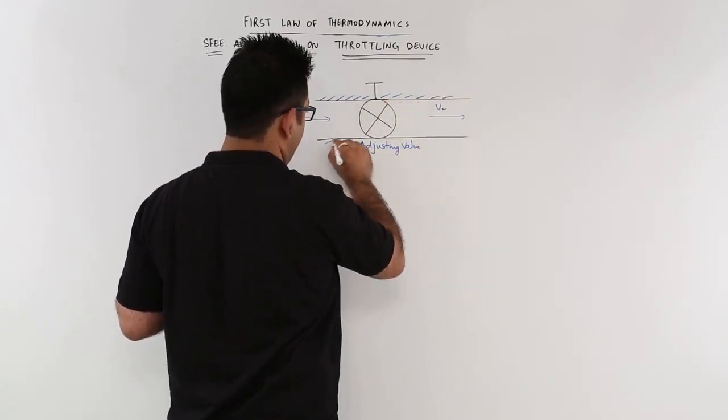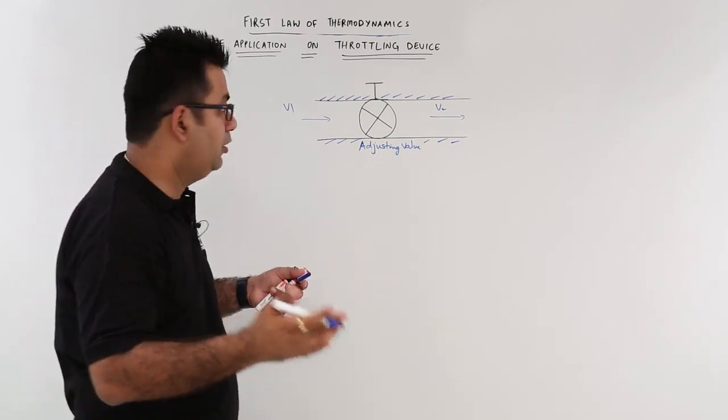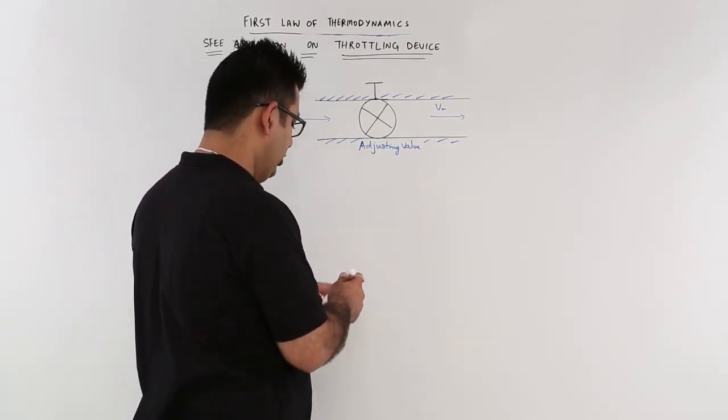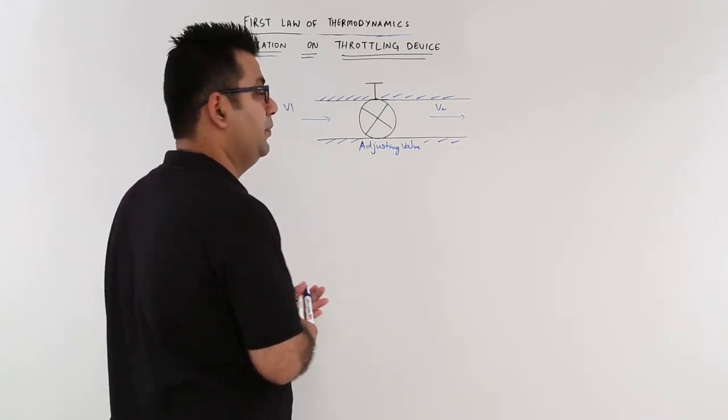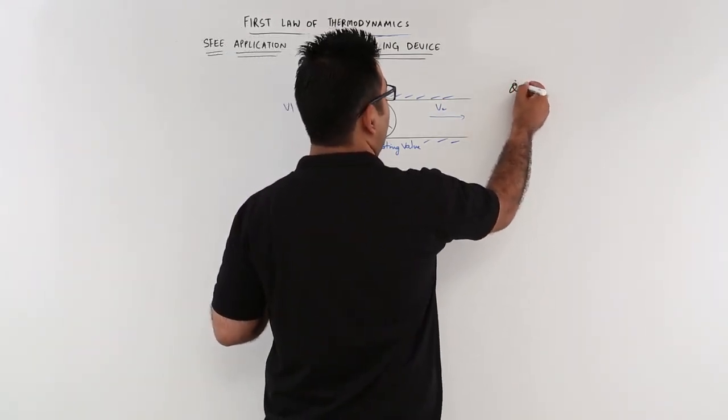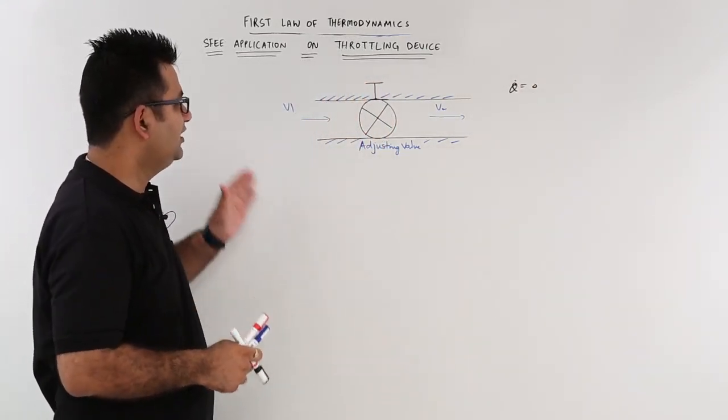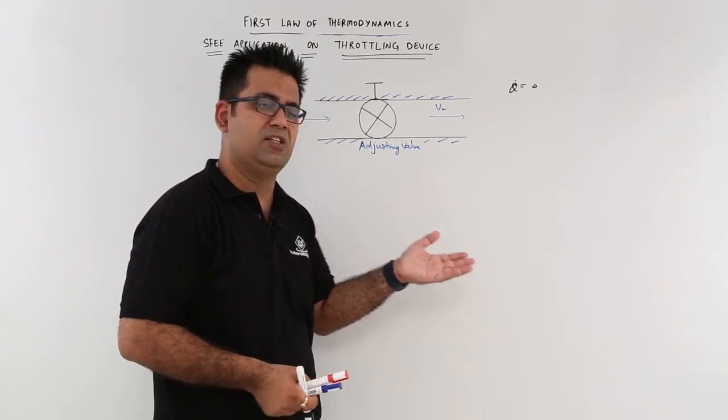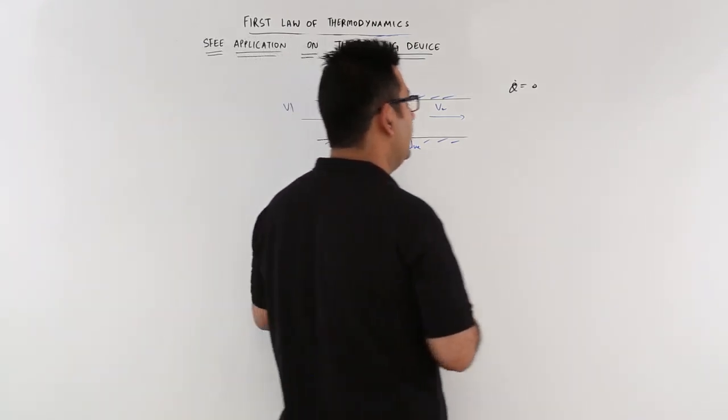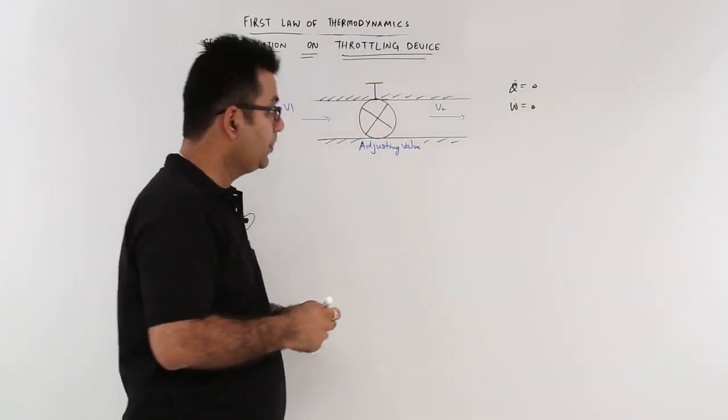Now let us say this pipe is insulated. Let us say we are carrying steam in this pipeline. Because it is steam we need to conserve that energy. We cannot afford it to be lost into the atmosphere. So we need to put some insulation. So the Q dot value becomes 0. Now because it is just a flow of steam in the pipeline there is no perceivable useful work output, neither input. So W dot also becomes 0.